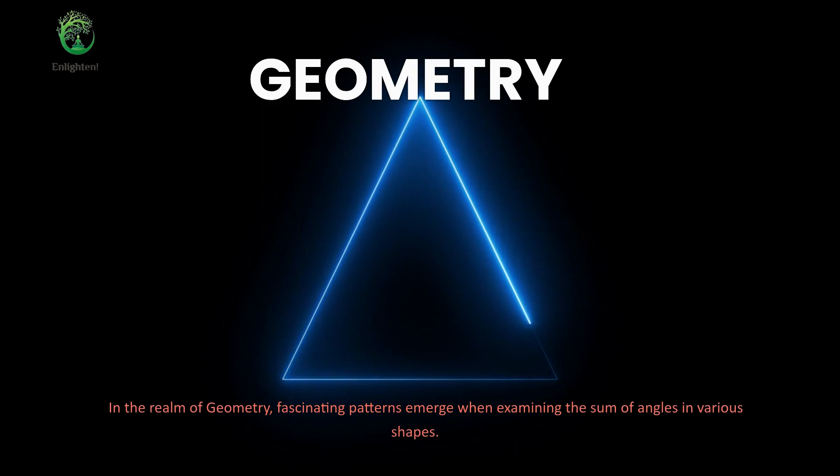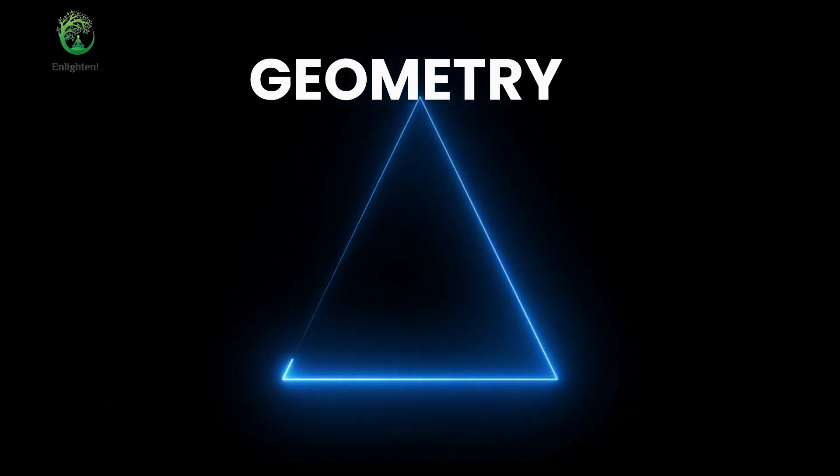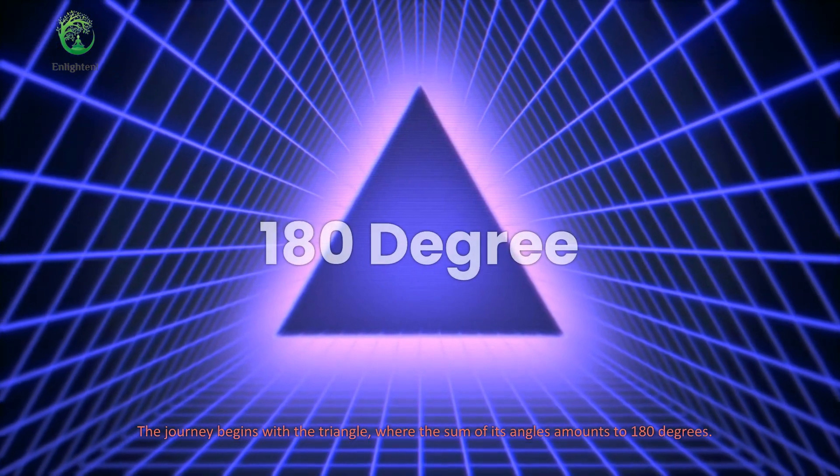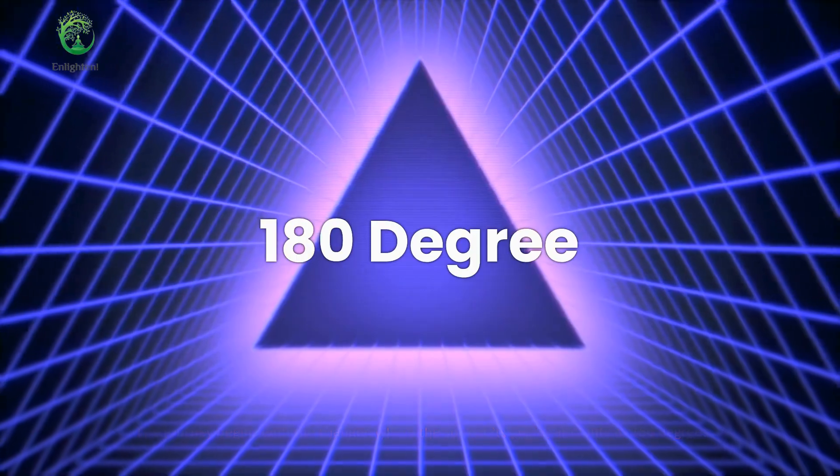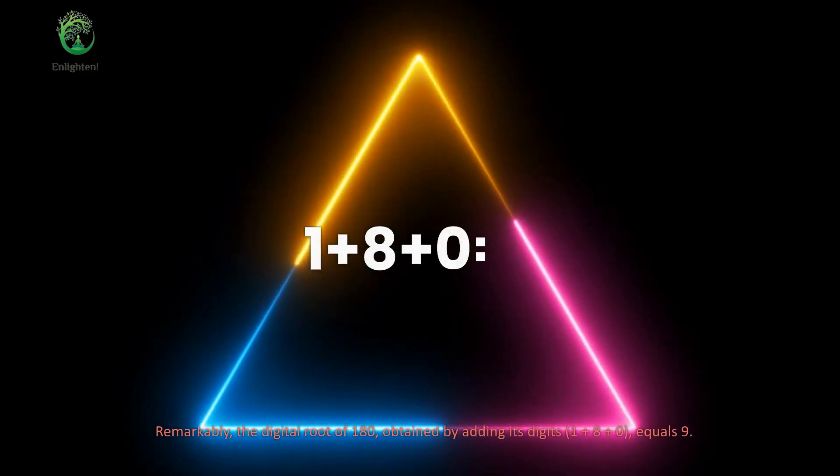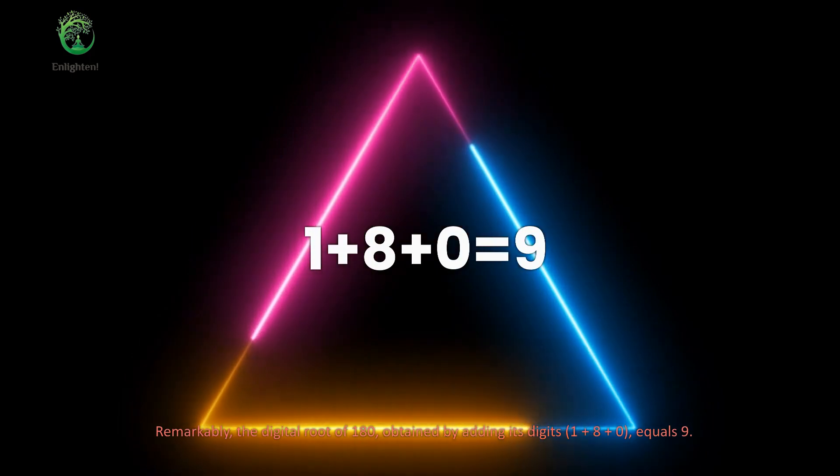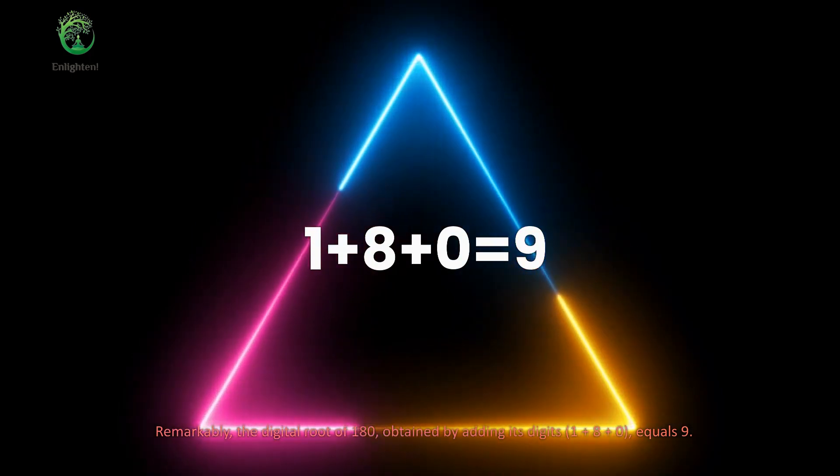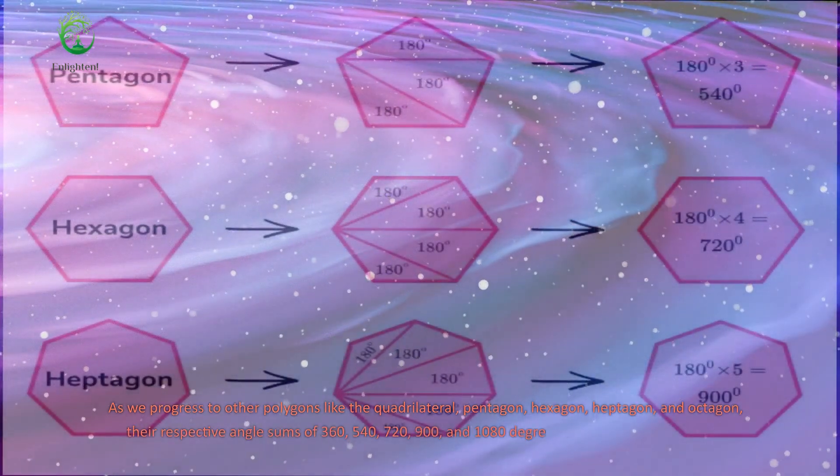In the realm of geometry, fascinating patterns emerge when examining the sum of angles in various shapes. The journey begins with the triangle, where the sum of its angles amounts to 180 degrees. Remarkably, the digital root of 180, obtained by adding its digits, 1 plus 8 plus 0, equals 9.